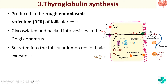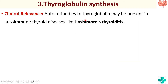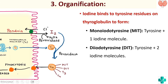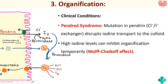A clinically relevant point: if you have antibodies to thyroglobulin, it can present as Hashimoto's thyroiditis — you will have a goiter due to autoantibodies to thyroglobulin. Regarding organification, iodine binds to the tyrosine residues on thyroglobulin — that is called organification, forming MIT and DIT. The channel involved in transport of iodine here is pendrin. If there is a mutation in the pendrin channel, we have Pendred syndrome, in which children present with sensorineural hearing loss as well as goiter.